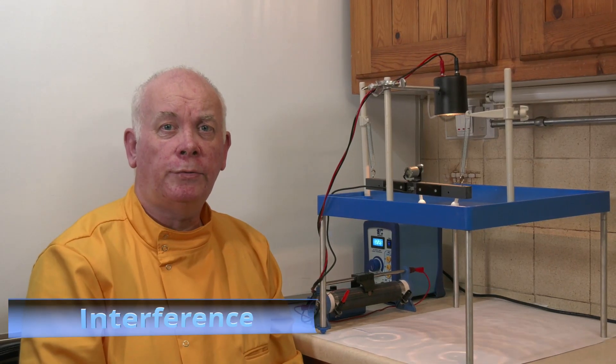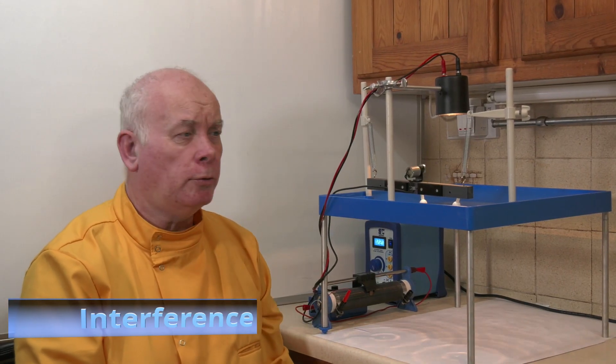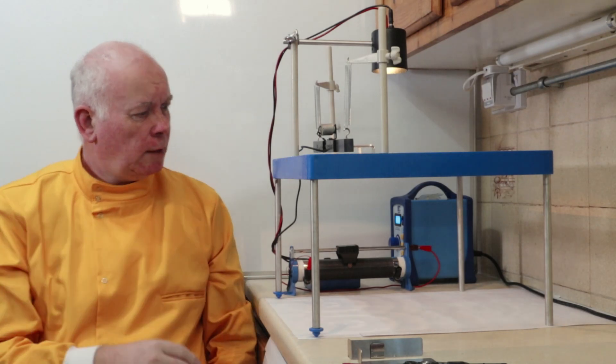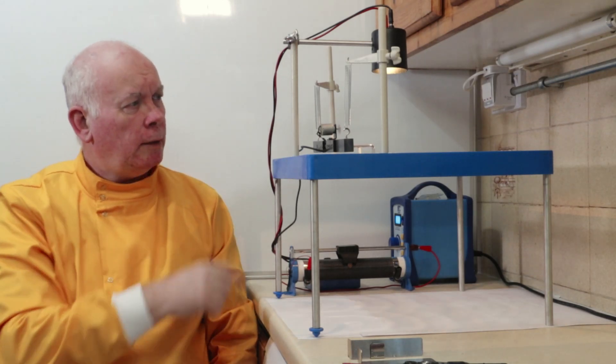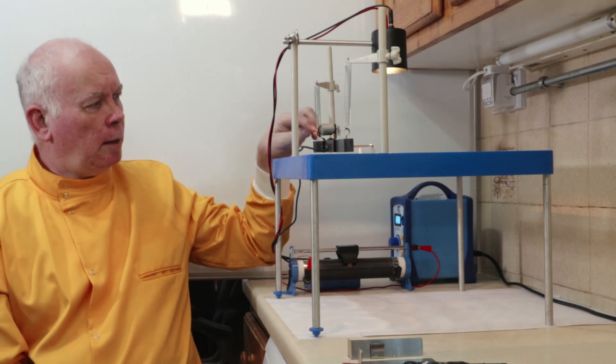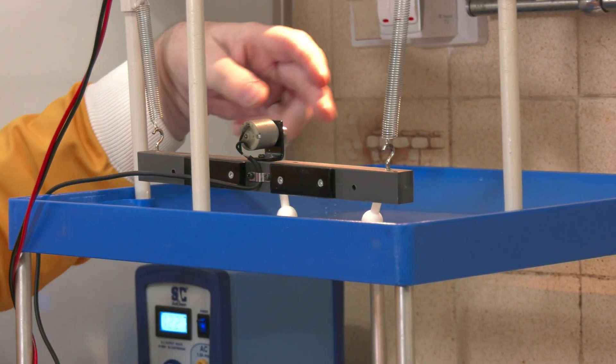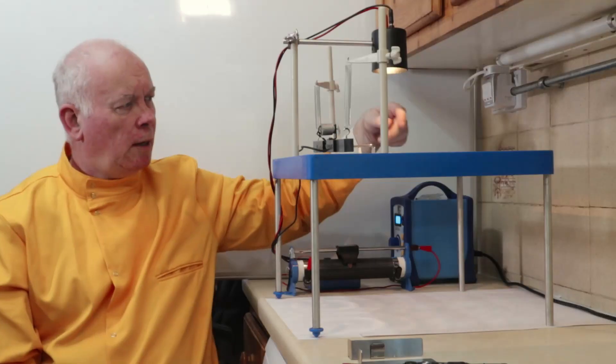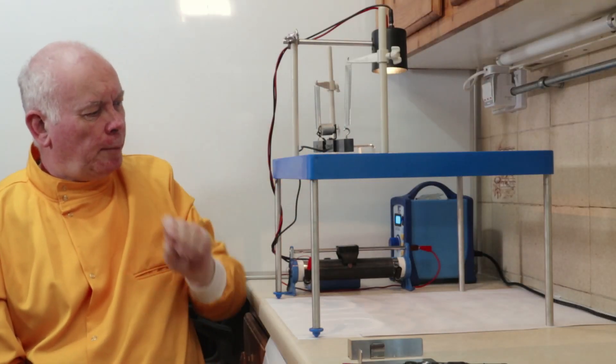We're going to have a look at interference. I have two point sources set up here in the ripple tank. I've got the oscillating bar, and connected to this I have two point sources that are moving up and down.